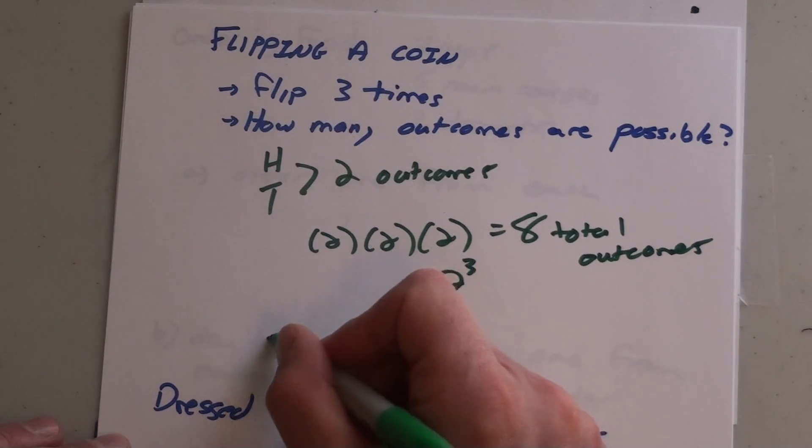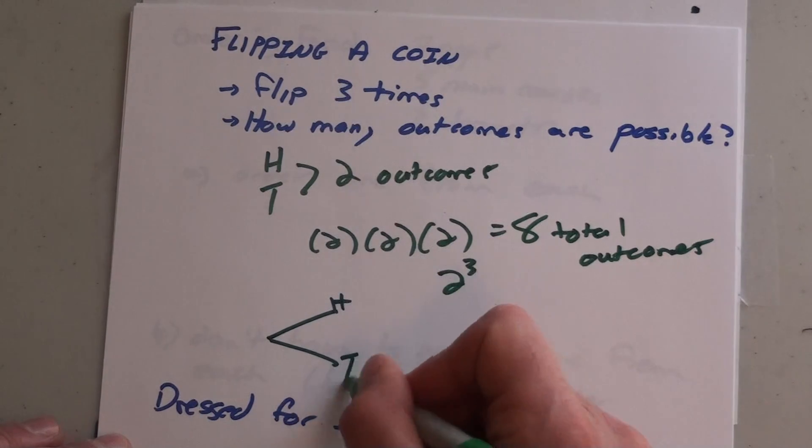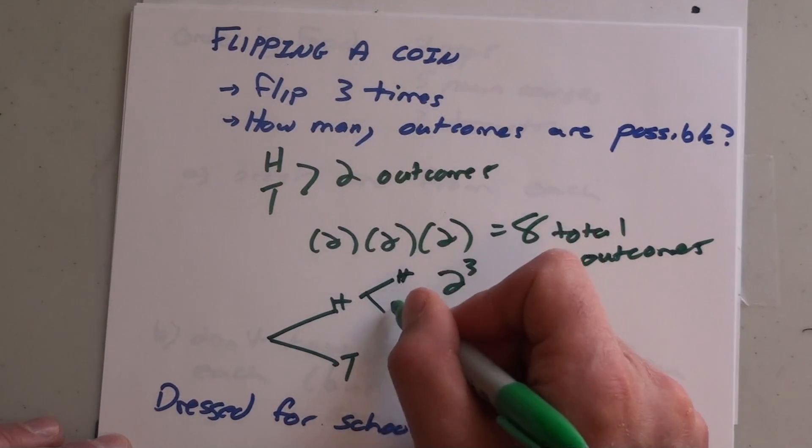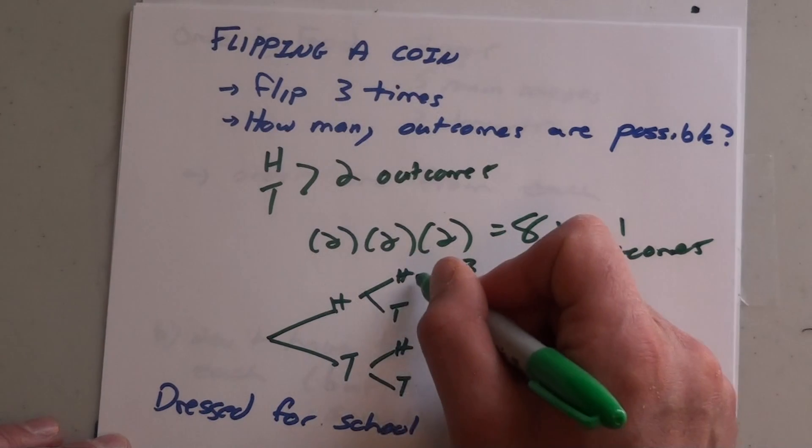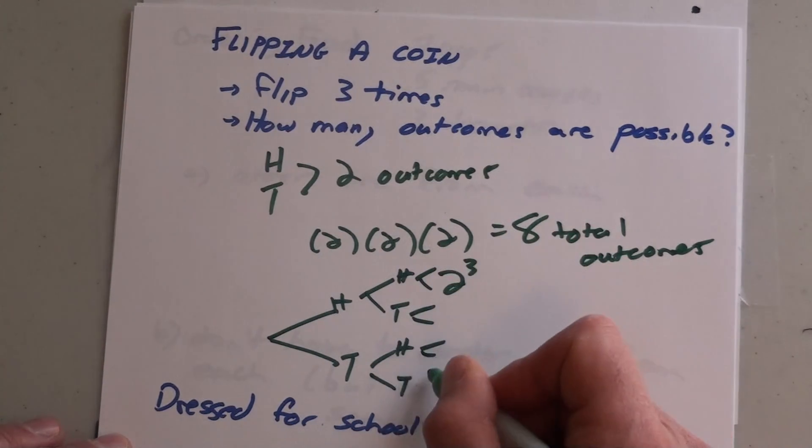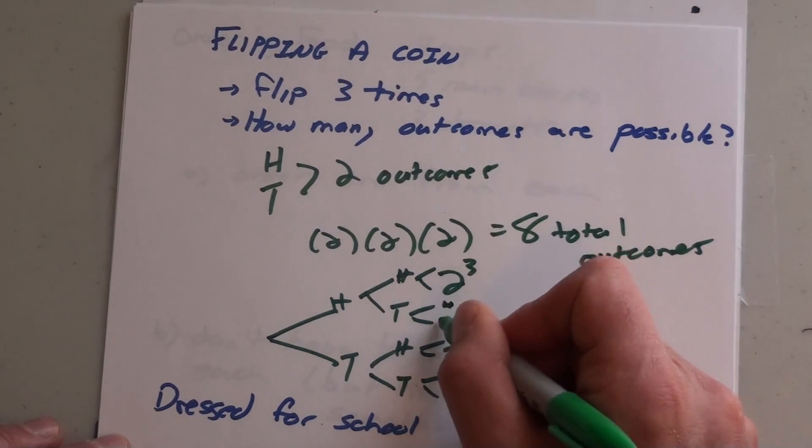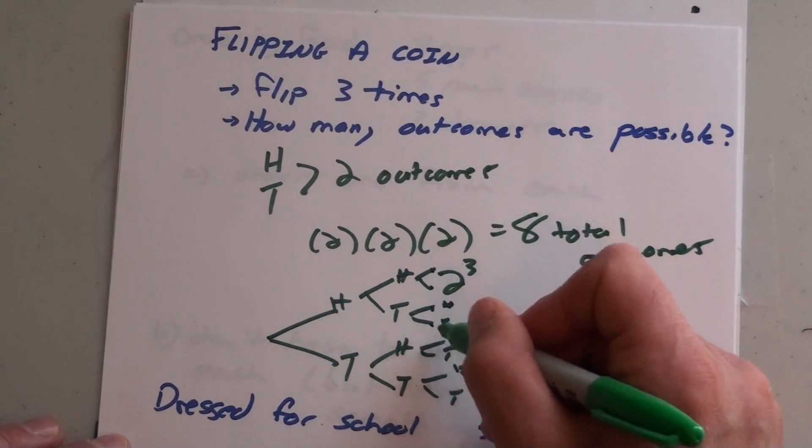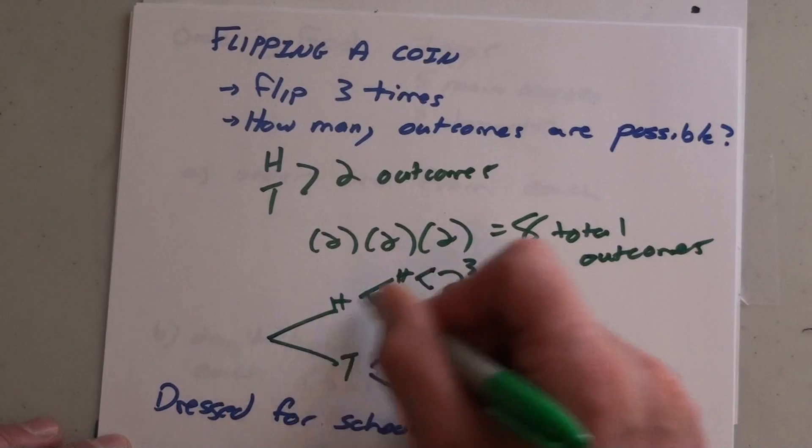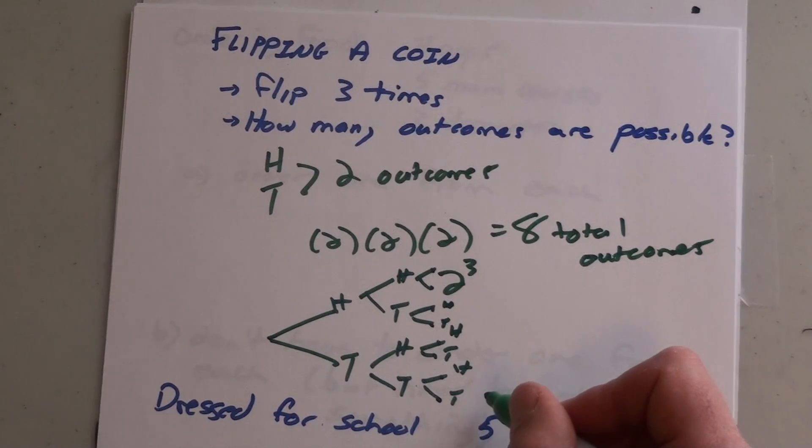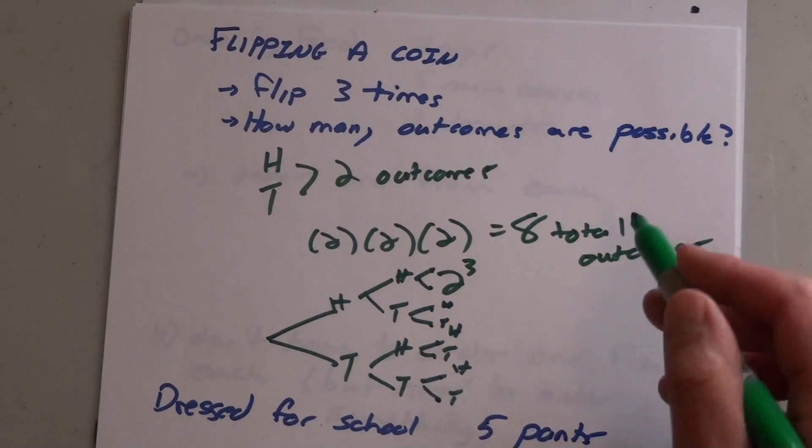I could have also done a tree diagram: heads, tails, heads, tails, heads, tails, and then again for the third one heads, tails, heads, tails. There'd be one, two, three, four, five, six, seven, eight total branches on that tree. Bottom line: eight total outcomes.